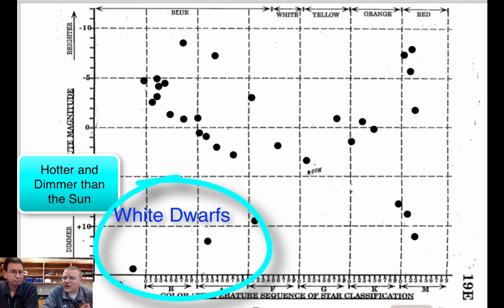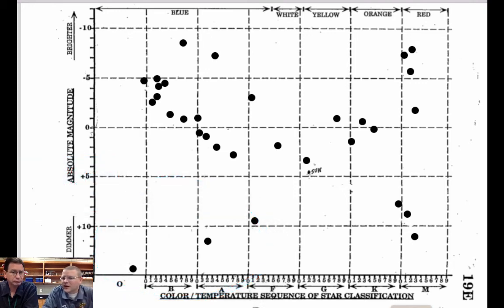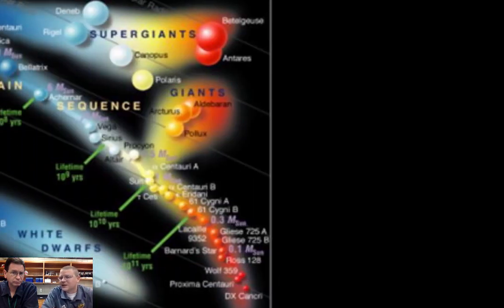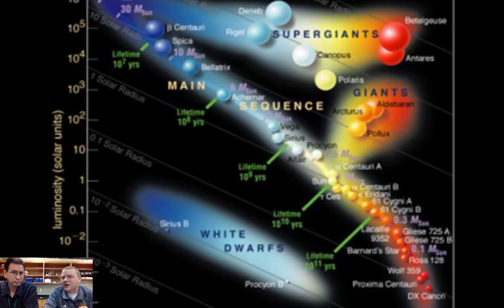So the HR diagram, the reason it's the most important graph you can ever get is when you plot one of these for any star cluster what you get is this sampling. You get this stretch down the middle called the main sequence. We get stars that are up in the upper right called red Giants and we get some stars down in the left corner called white dwarfs in almost every star collection that we see. So we can categorize any star just by putting it on this chart.